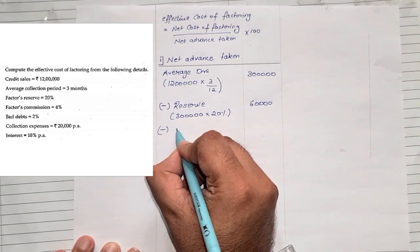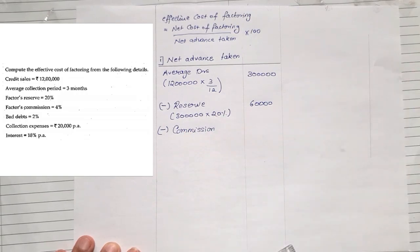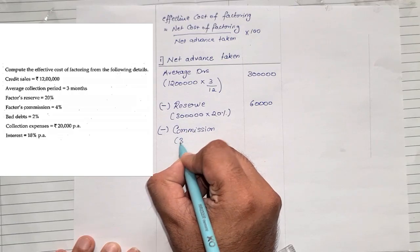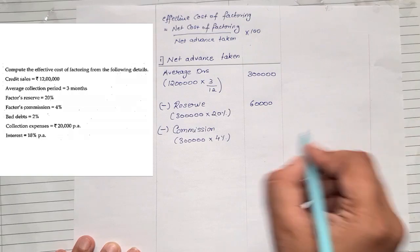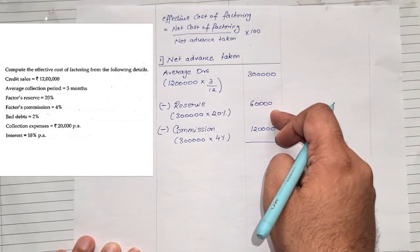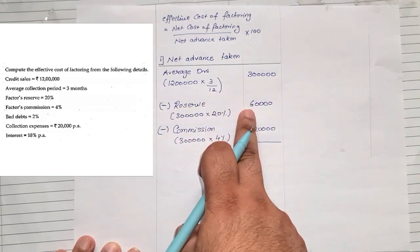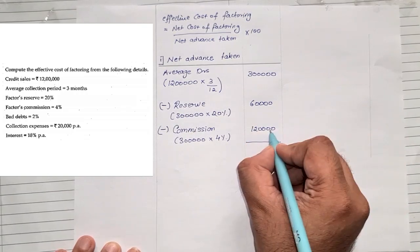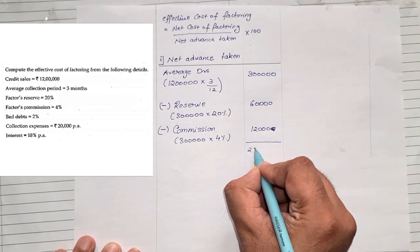Next is less commission. In the question, factor commission is 4%, so 3 lakhs into 4% comes to 12,000. So 3 lakhs less 60,000, that gives 2 lakhs 40,000, less 12,000, which gives a balance of 2 lakhs 28,000.